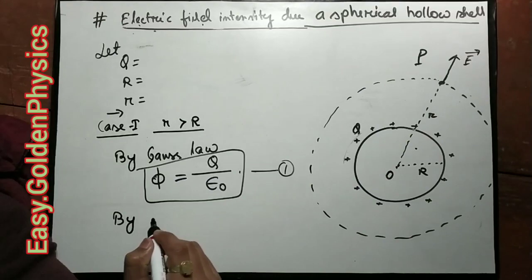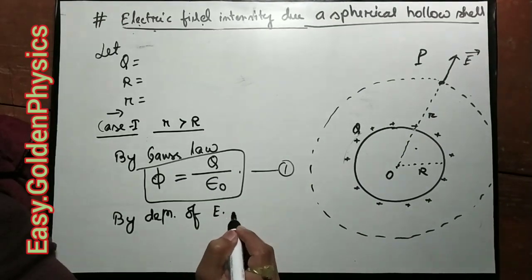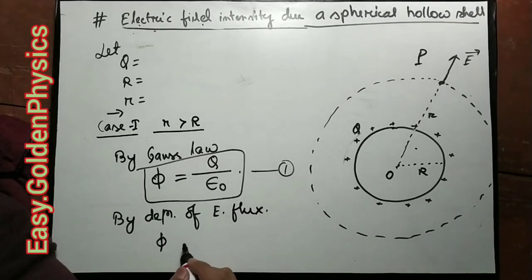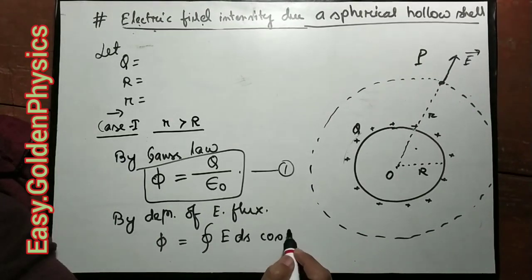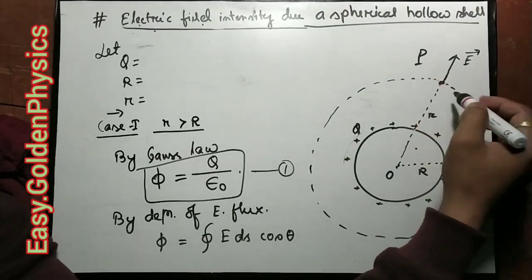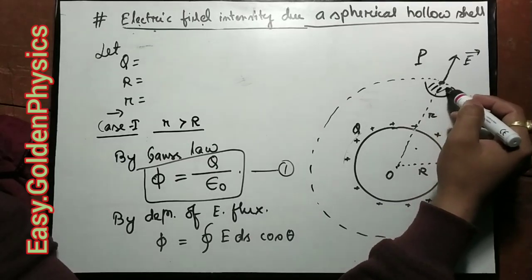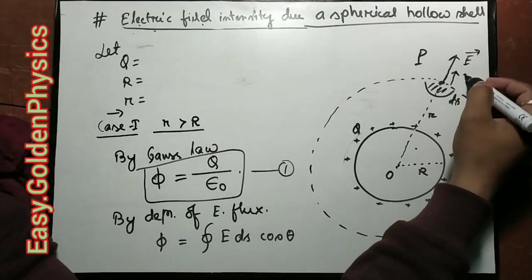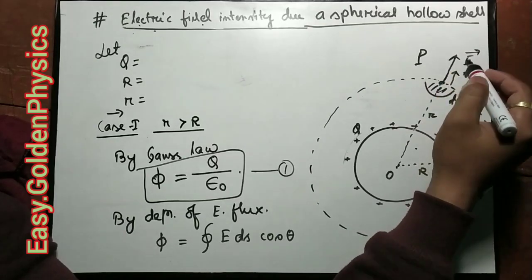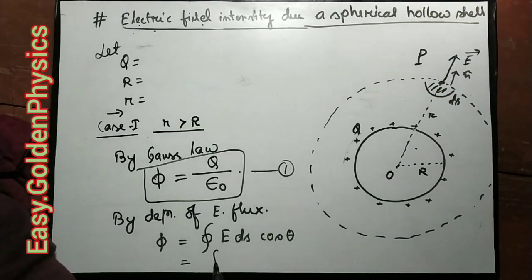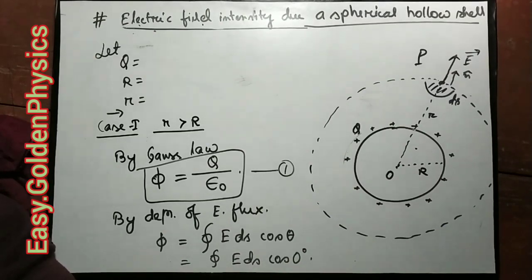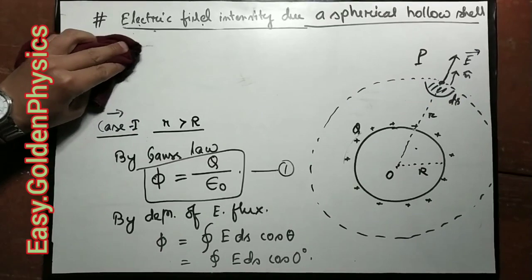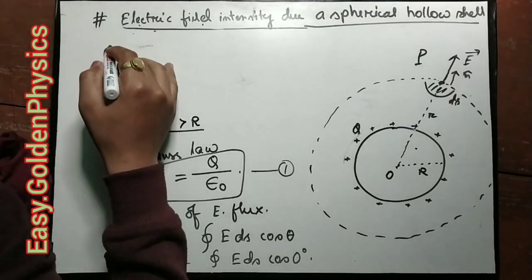By definition of electric flux: electric flux phi is the closed surface integral of E dot ds over the surface. The surface is perpendicular such that the angle between E and ds is zero.